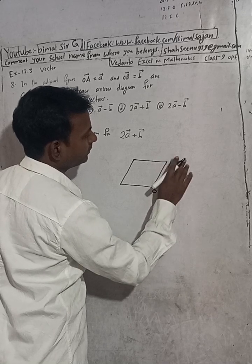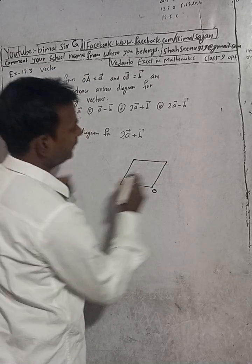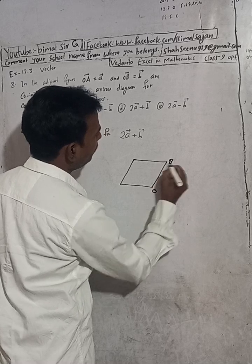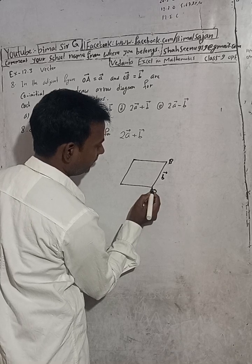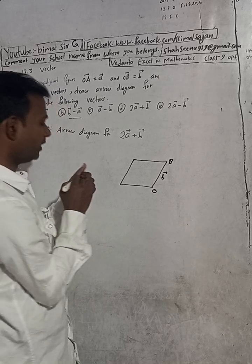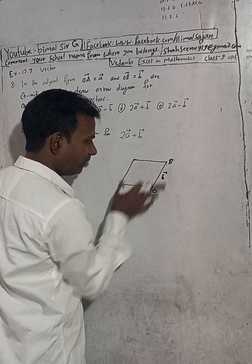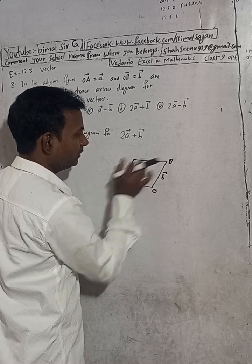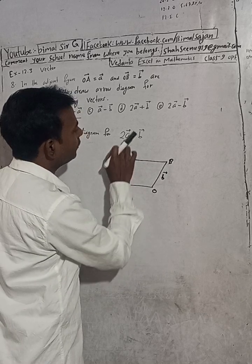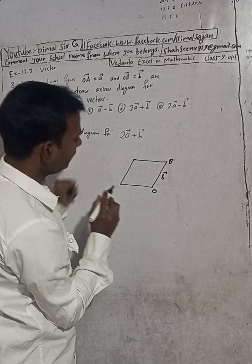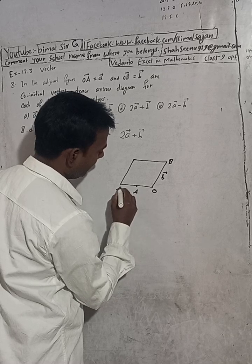Sorry, this is capital B. In the parallel parallelogram law, the properties are: opposite sides are parallel and equal. These are equal and parallel to each other. For 2A, I will take a midpoint here — this is A and this is A-dash.